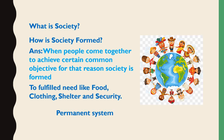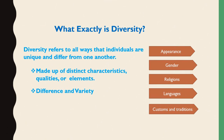A society has to create a permanent system; without a permanent system, the day-to-day existence of society cannot be carried on. The existence of many such systems makes the society stable. Now, what exactly is diversity? Diversity refers to all the ways that individuals are unique and different from one another. We are made up of distinct characteristics and different qualities, different from one another in many varieties of ways.